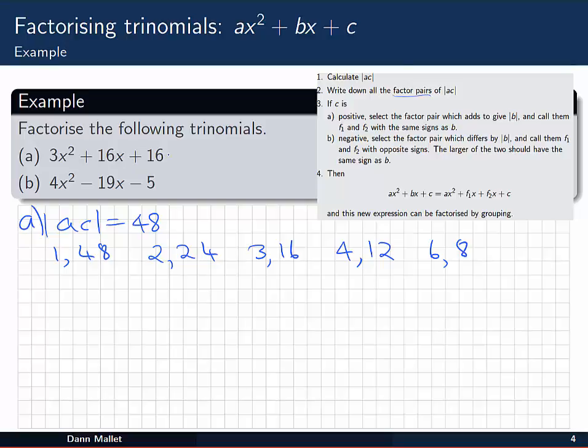In our trinomial here we've got +16 as c. So c is positive and we follow the 3a branch. We select a factor pair which adds to give the absolute value of b. In our case 16.